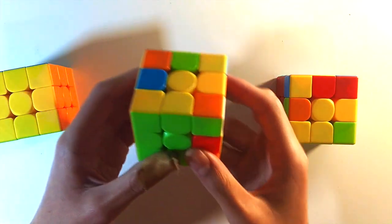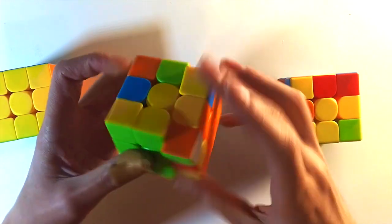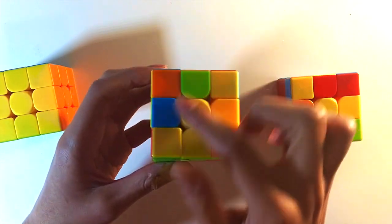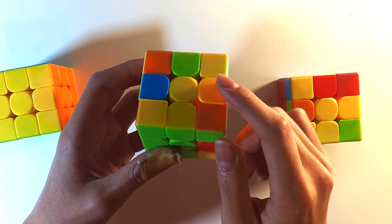And then for this one, you still have the same R, U, R' insert, but instead you have these two misoriented edges, and these two are correctly oriented.